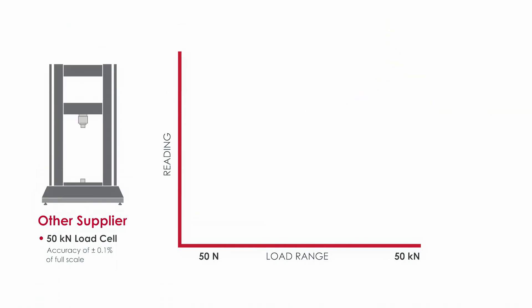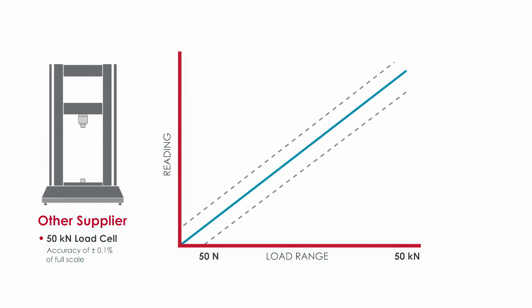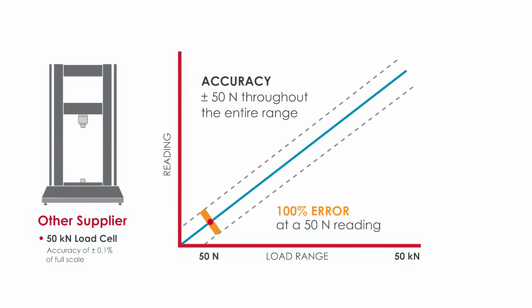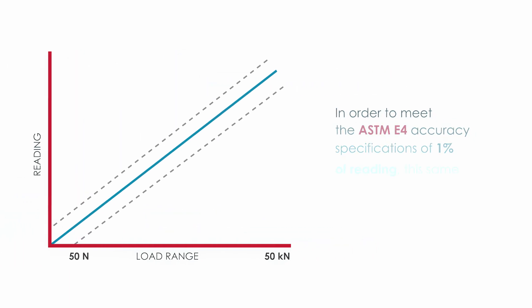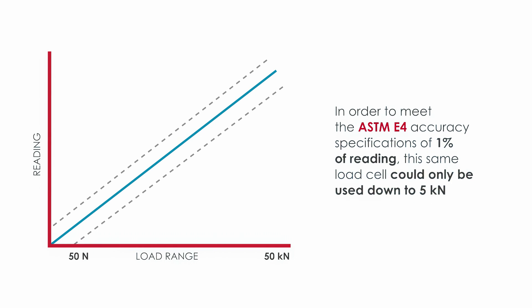Compare that to a similar configuration using a load cell from another supplier that states an accuracy of plus or minus 0.1 percent of the full scale. Remember, in this case the error is constant, so a 50 kilonewton load cell would have an accuracy of plus or minus 50 newtons throughout the entire range. That equates to a 100 percent error at a 50 newton reading. In fact, in order to meet ASTM E4 accuracy specifications of 1 percent of reading, this same load cell could only be used down to 5 kilonewtons.